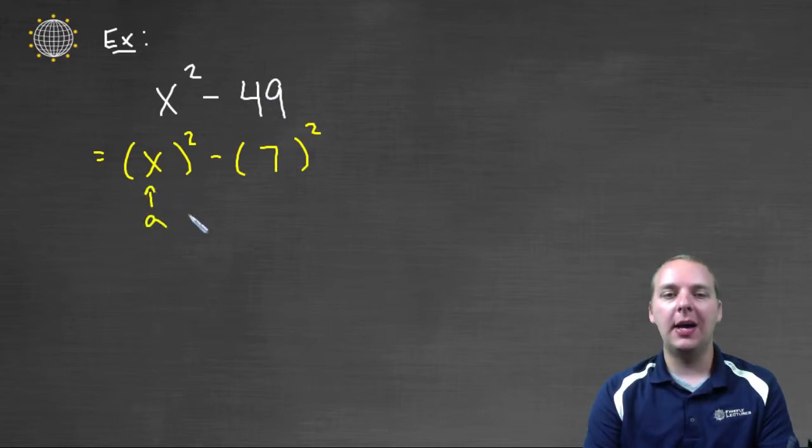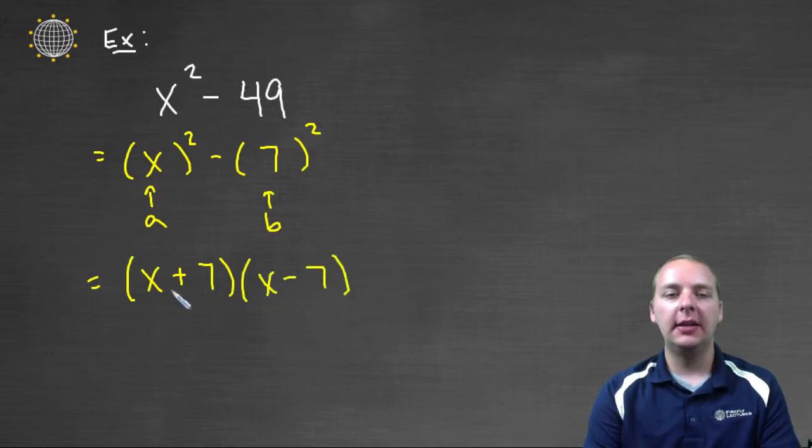The x is like my a, and the 7 is like my b. Basically, we just use the template, that special factoring form. It factors as (x + 7)(x - 7). That's (a + b)(a - b).